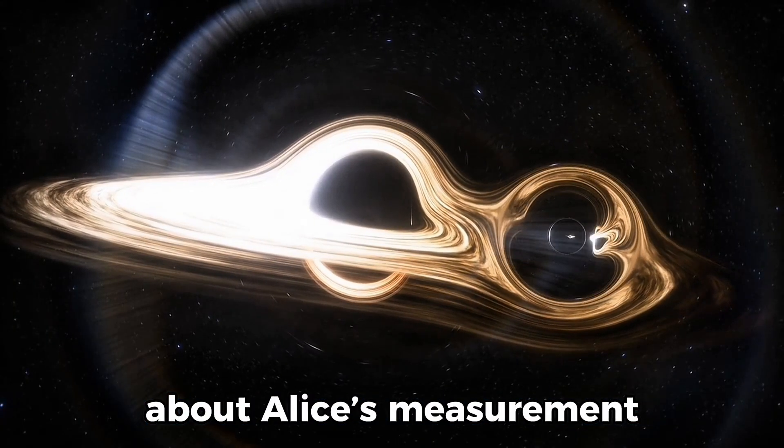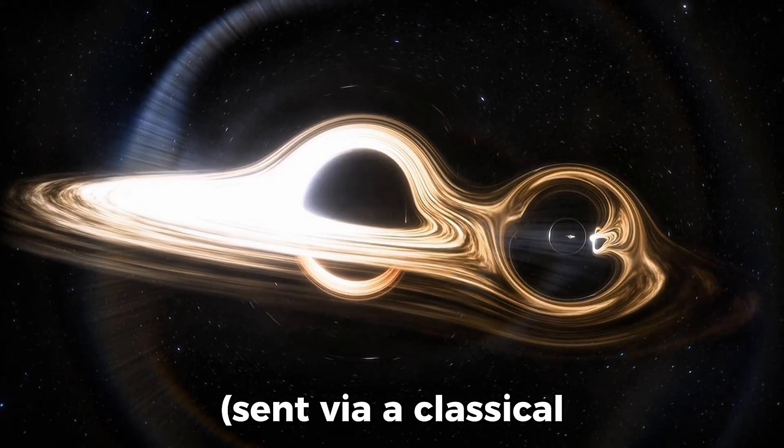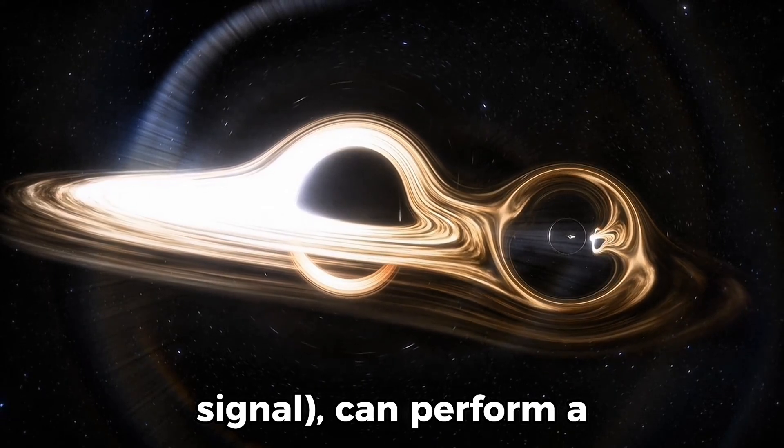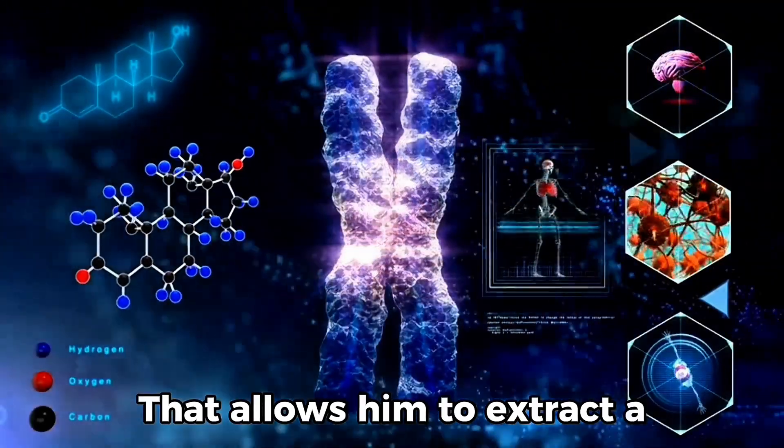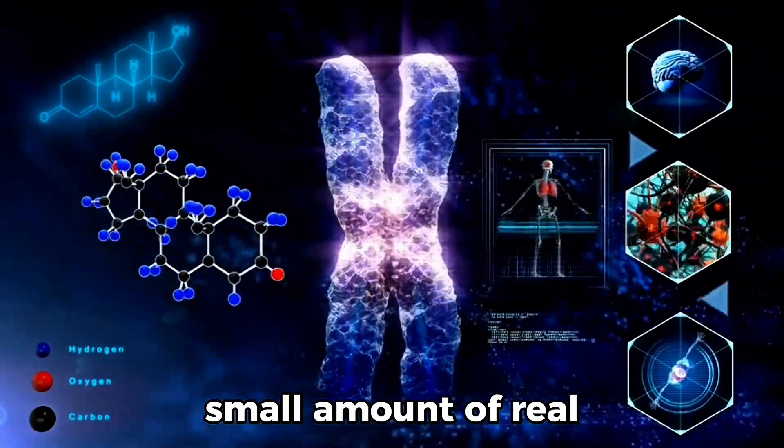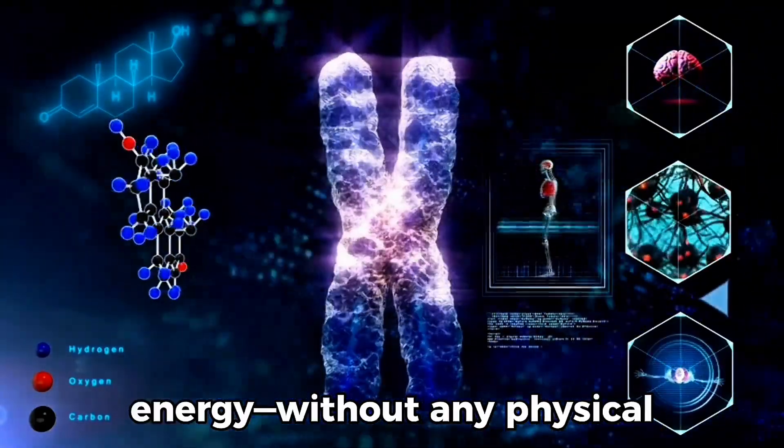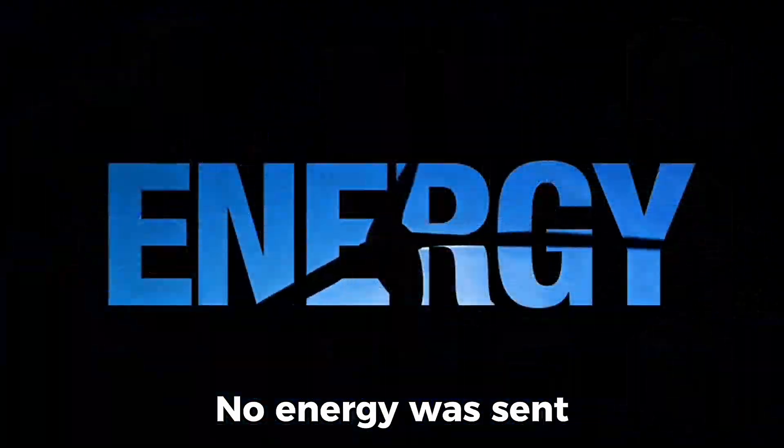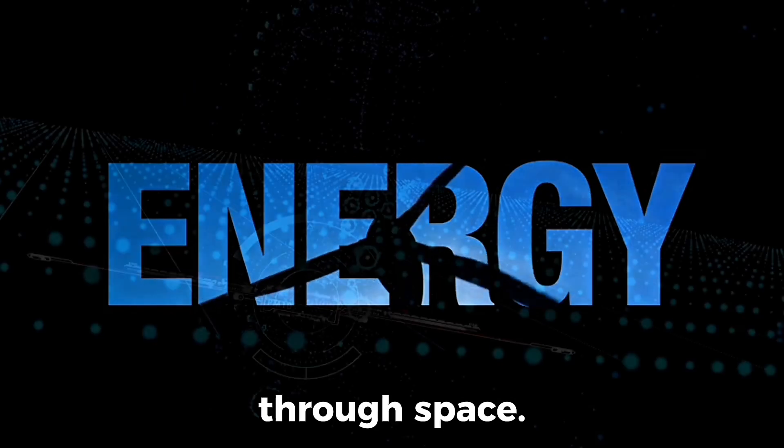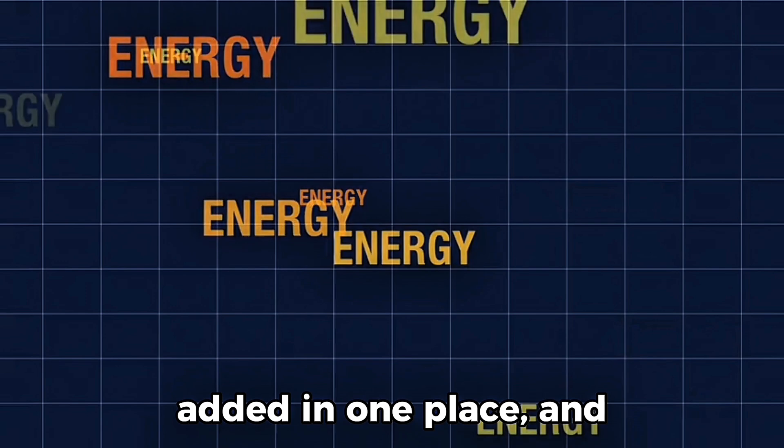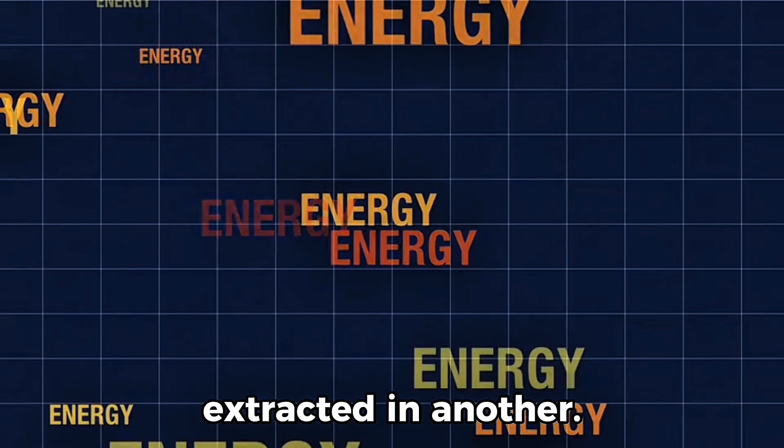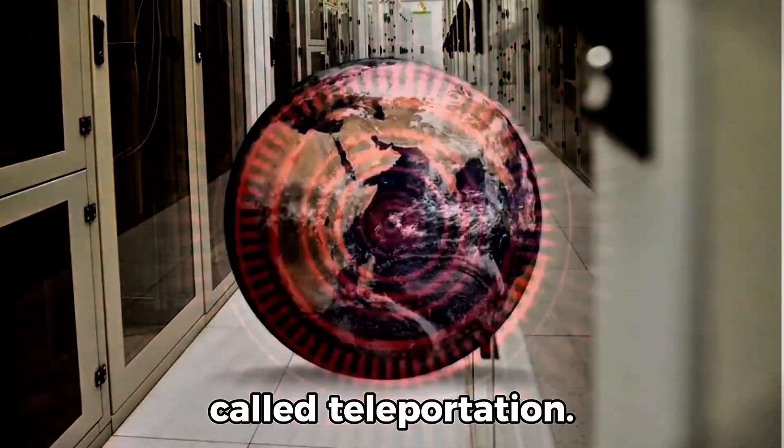though no real particle travels. Bob, armed with information about Alice's measurement sent via a classical signal, can perform a complementary operation on the vacuum in his region that allows him to extract a small amount of real energy without any physical connection between them. No energy was sent through space. No particles traveled. And yet, energy was added in one place and extracted in another. That's why it's called teleportation.